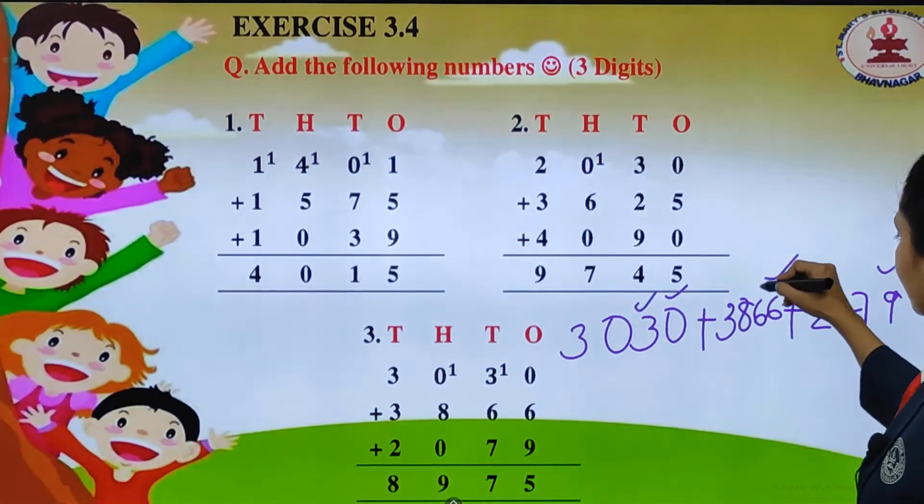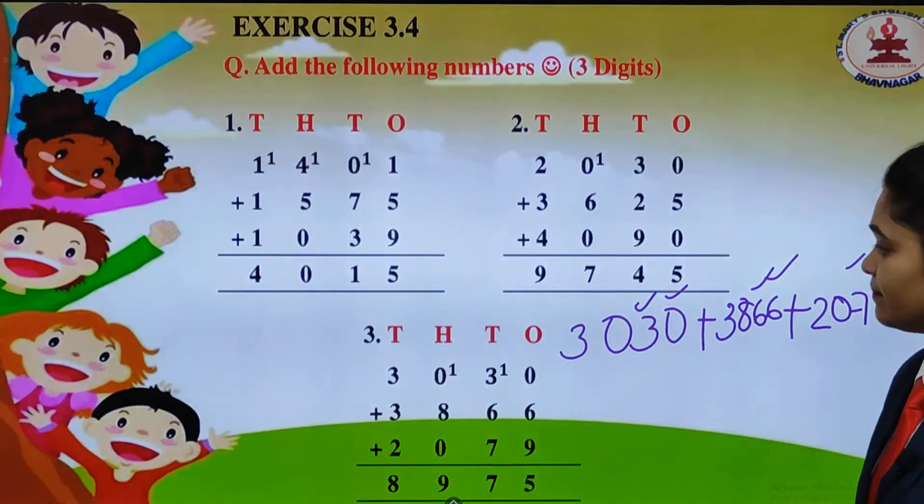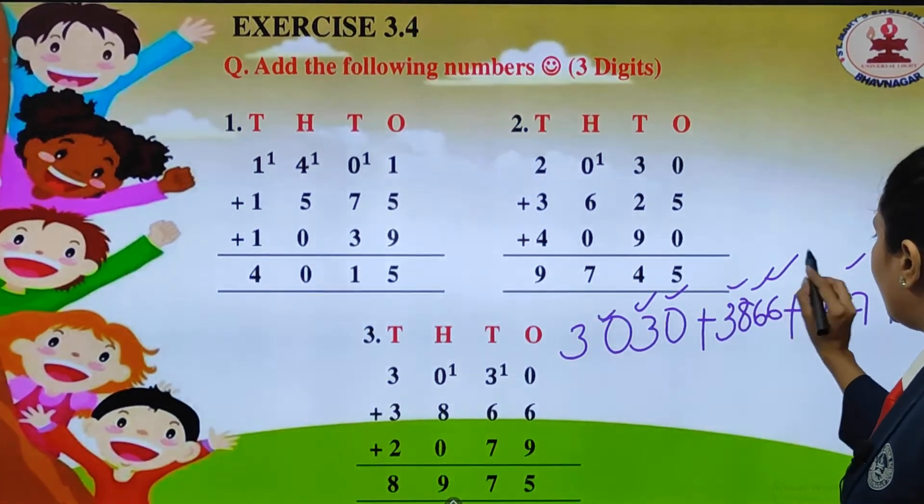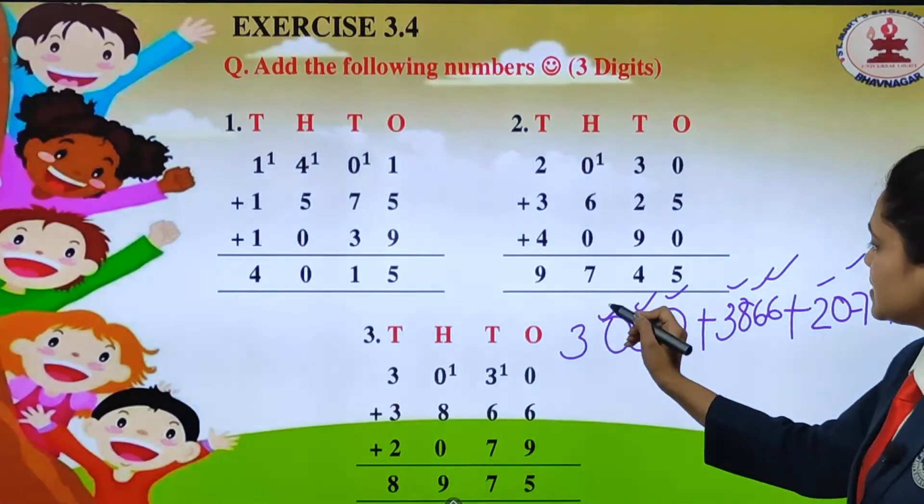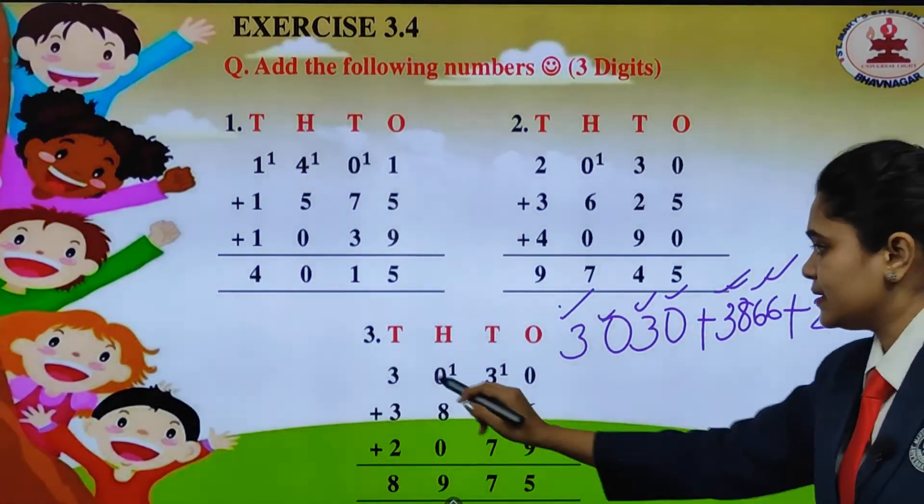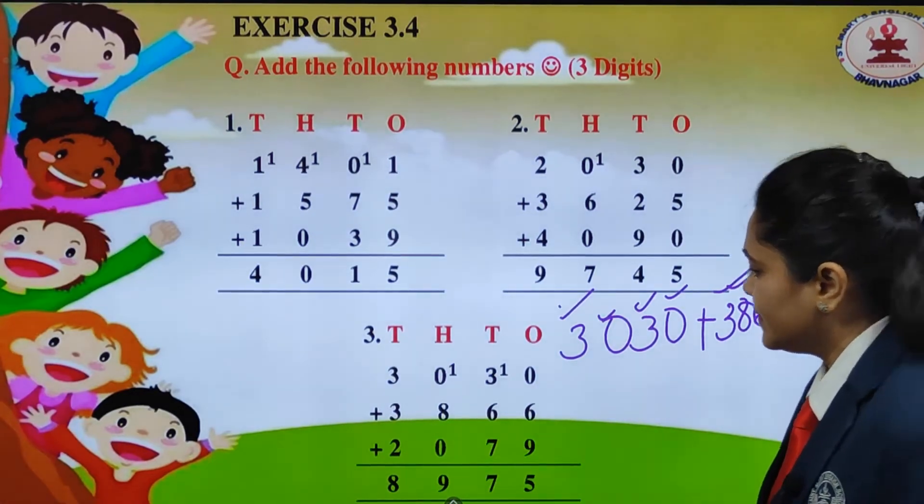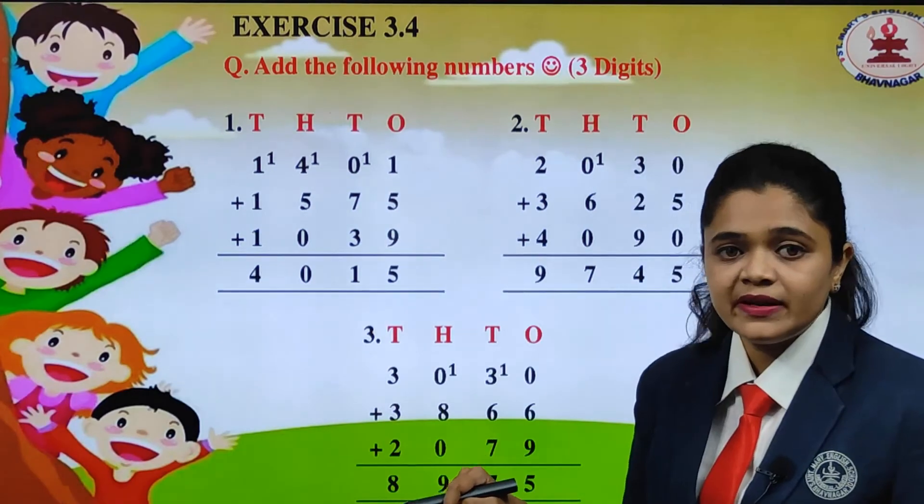Then we have 3, 6, 7. We have placed under tens. Then we have 0, 8, 0 under hundreds. And we have thousands place value. What we will put? 3, 3, 2. Here 3, 3 and 2. We have placed all the numbers according to the place value.